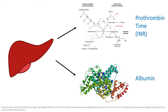The liver also manufactures albumin. If a patient has impaired liver function, the serum albumin concentration may decrease. A serum albumin concentration of less than 3.5 grams per deciliter might be evidence of liver dysfunction, but it could also be a sign of malnutrition or other disease states.